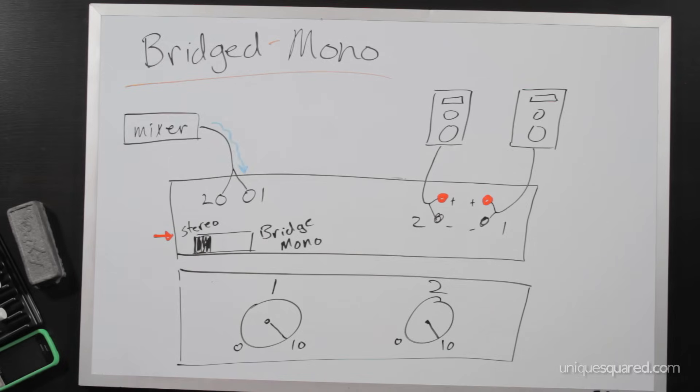I have two inputs coming from the mixer, and I have two outputs as well. Each output has a red and black post. Red for positive, black for negative. Both the left and right channels should be at the same volume, and as you can see, I have them cranked all the way up, but that's just my personal preference. You can have them at whatever volume you want.